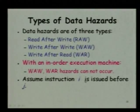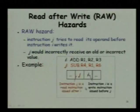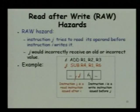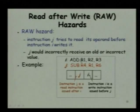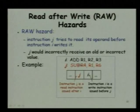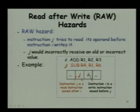Let us consider two instructions where i precedes j. First let us look at the read after write hazard: i is writing to R1 and j is reading R1 — so there is a true data dependency from i to j. This is a read after write hazard. The instruction j tries to read its operand and if instruction i has not produced the operand by that time, there will be a wrong result. Instruction j follows instruction i, so you can have a hazard here.